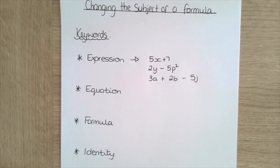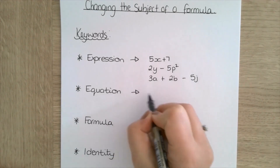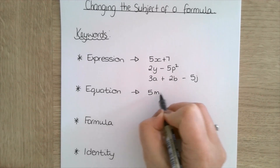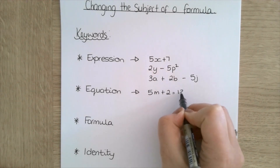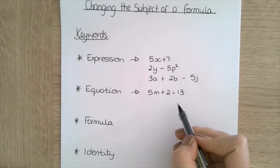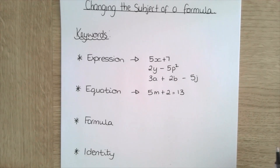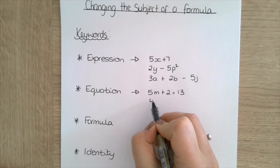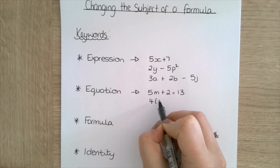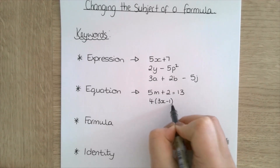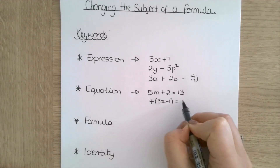An equation is a bit like an expression, however it's equal to something. So you have something like 5m plus 2 equals 13. You could then rearrange that and solve it. Another example of an equation would be 4 lots of 3x minus 1 equals 11 — again, something that we can rearrange and solve.